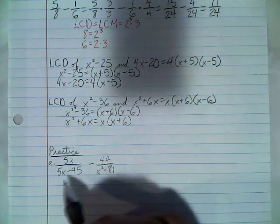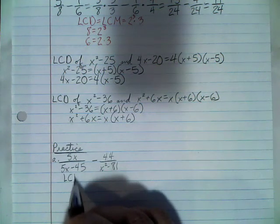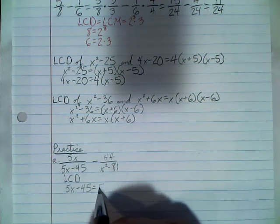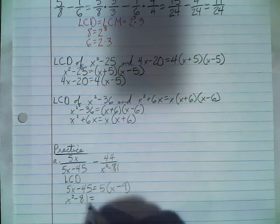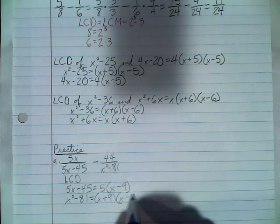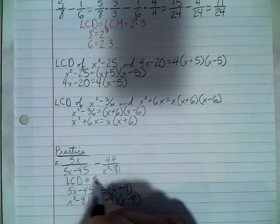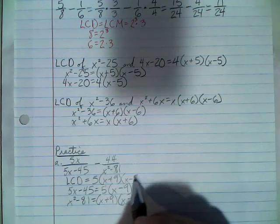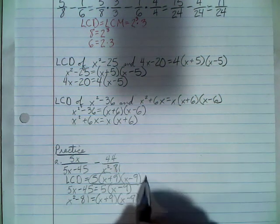Finding the LCD: for 5x minus 45, a 5 factors out of both terms, leaving 5(x minus 9). For x² minus 81, that's a perfect difference of squares, giving (x plus 9)(x minus 9). So the LCD is 5 times (x plus 9) times (x minus 9) — highest exponent on all factors is 1.